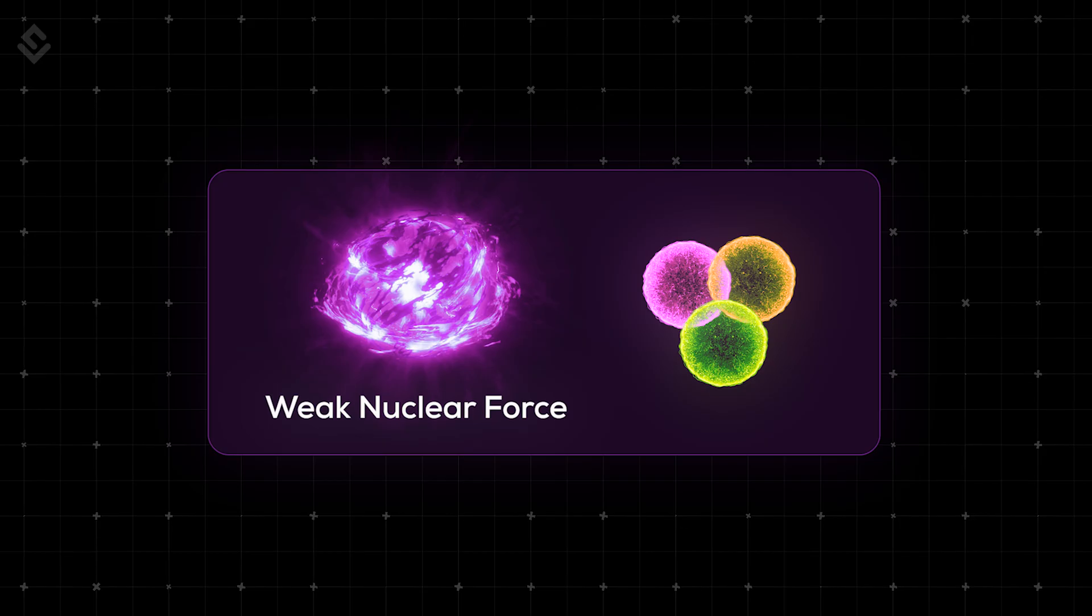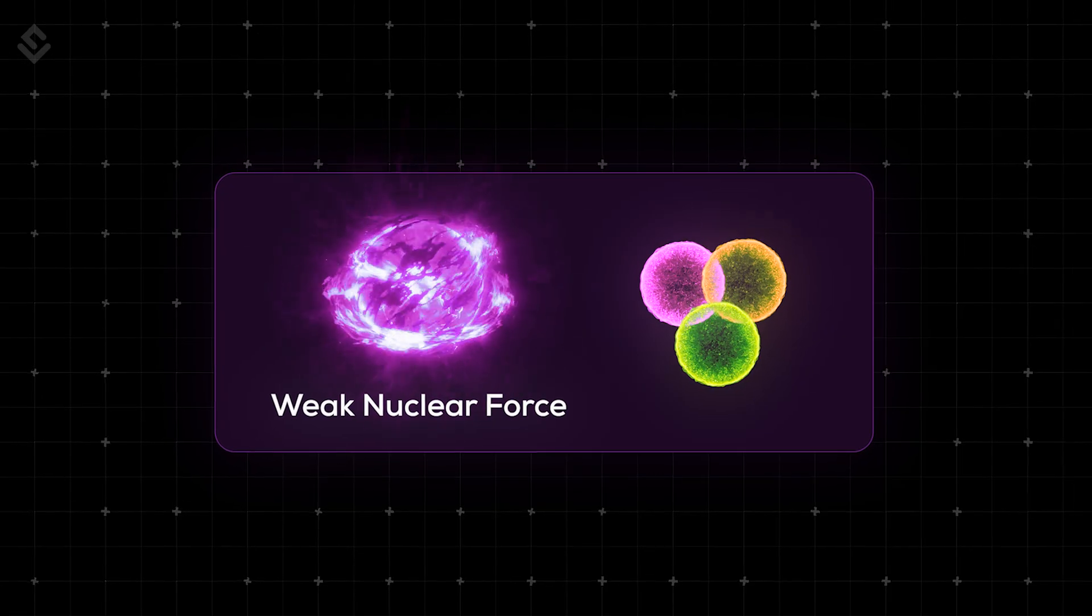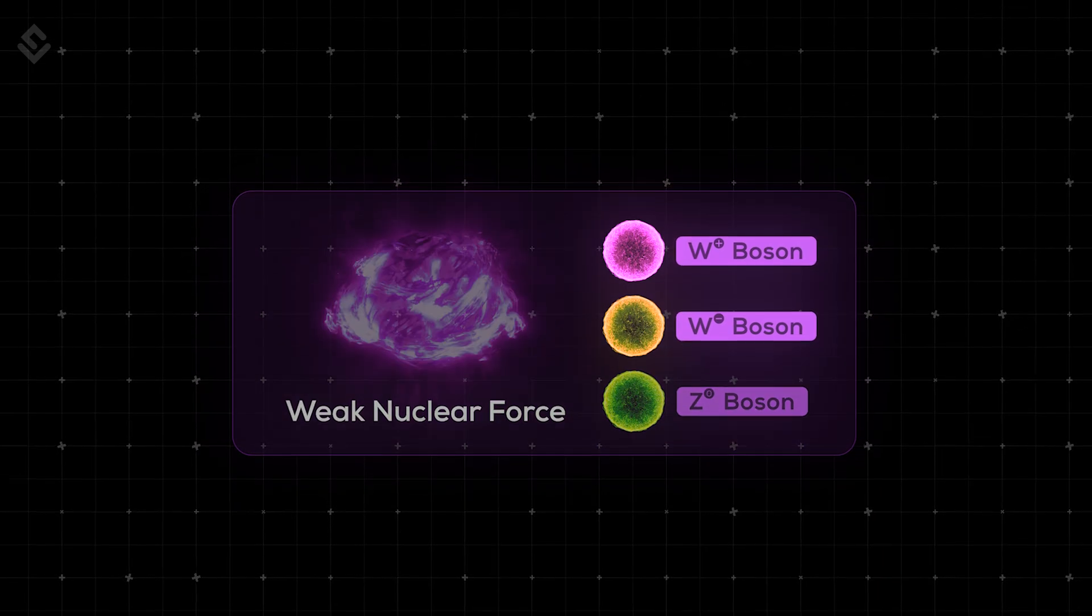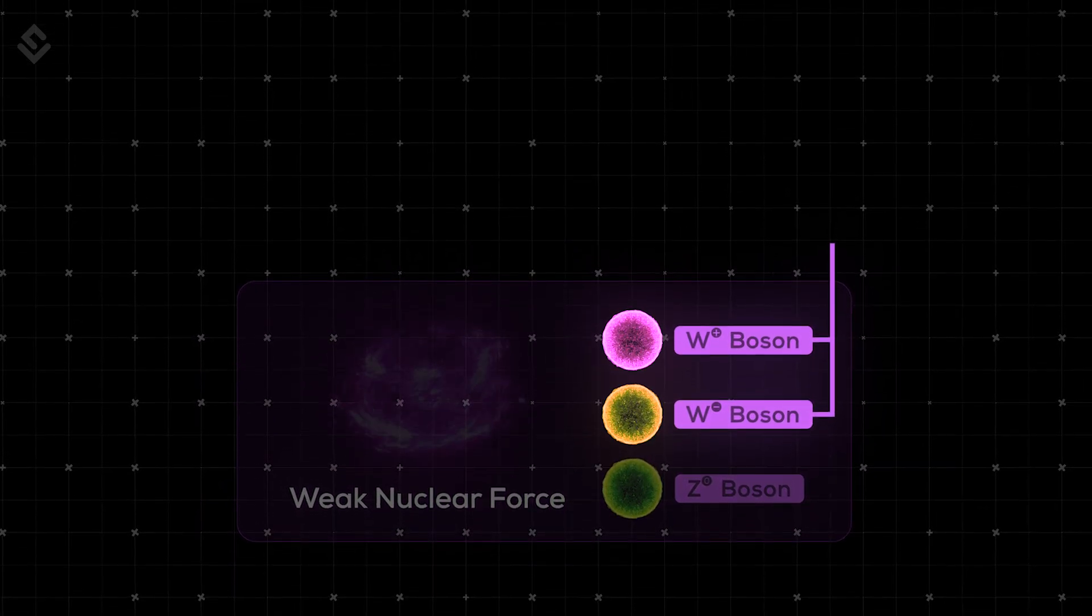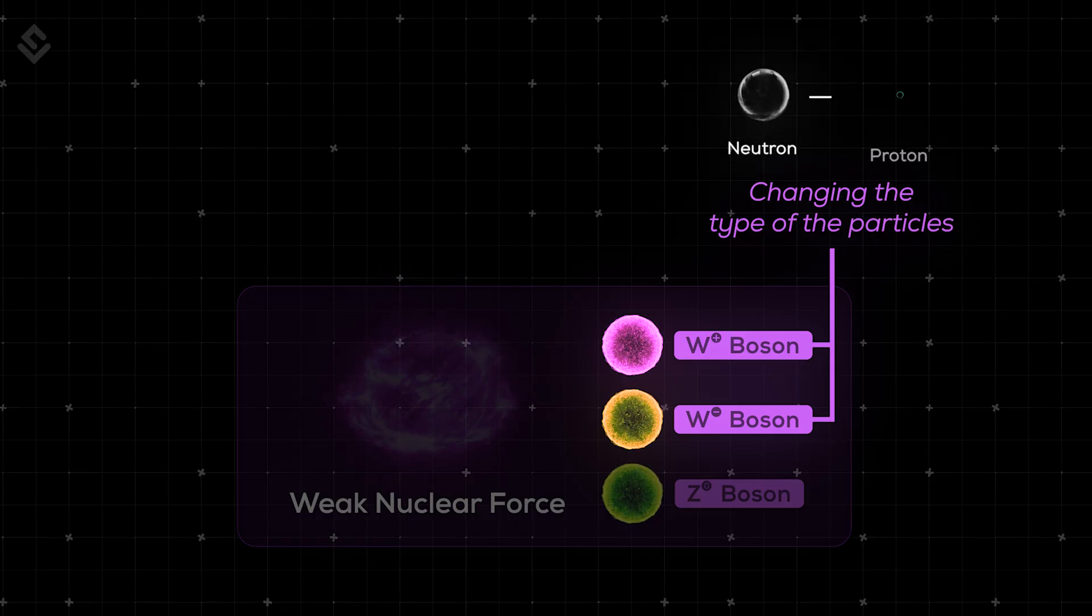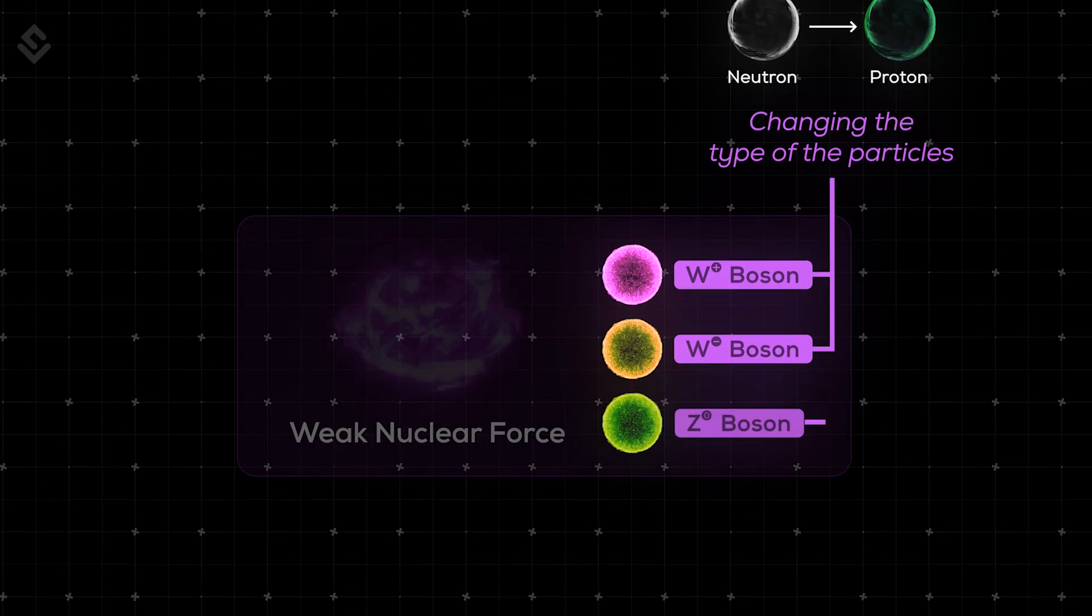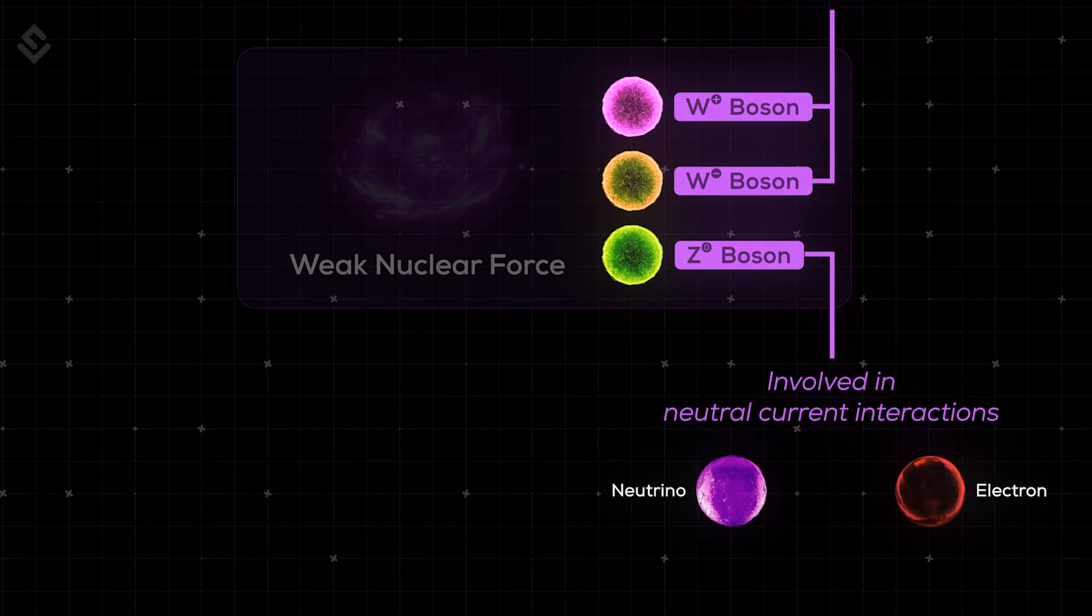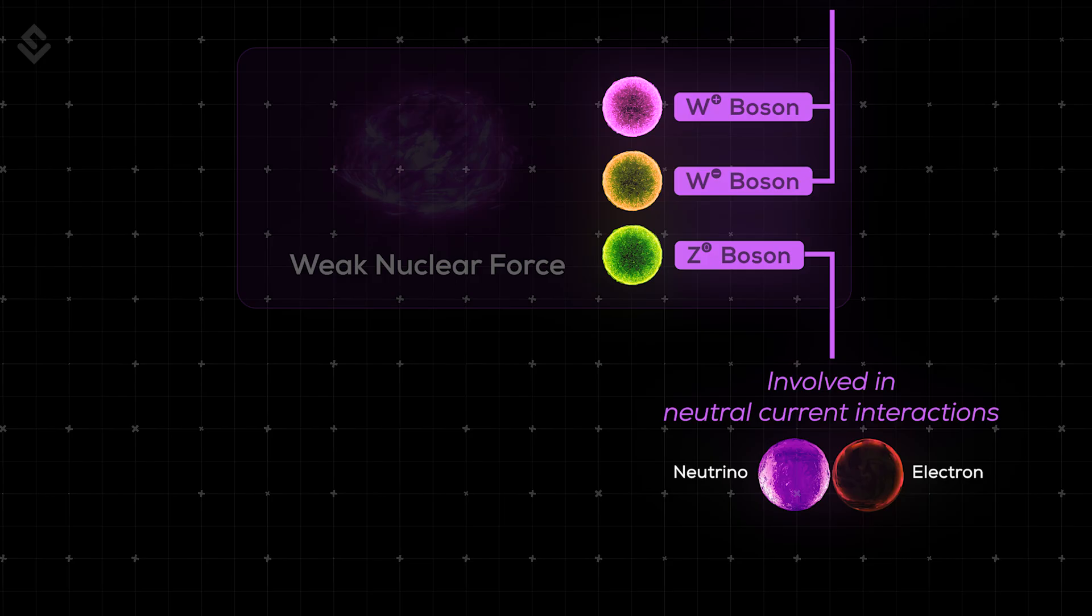There are three types of particles associated with weak nuclear force. The W plus, W minus and Z zero bosons. The W plus and W minus bosons are responsible for changing the type of the particles. For example, the previously mentioned neutron to proton. And the Z zero bosons are responsible for neutral current interactions, where particles interact without changing their types.